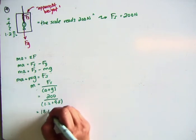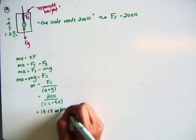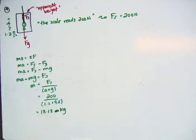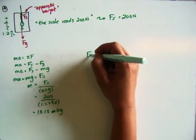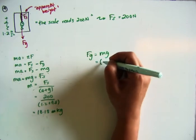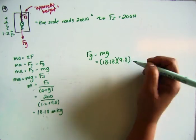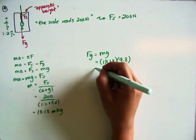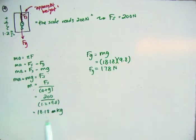And we end up with 18.18 kilograms. And that's the mass. So now that we know the mass of the object, we can find the force of gravity which is mg. So then, putting in 18.18 times 9.8 will give us the answer of 178 newtons. And that's the true force of gravity.